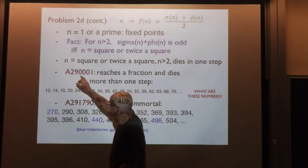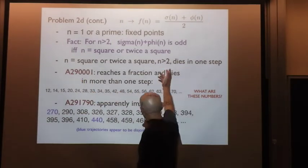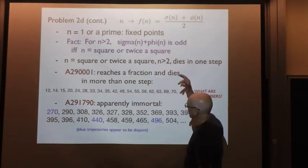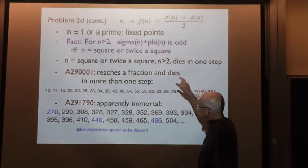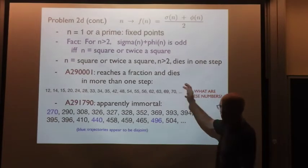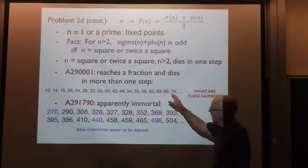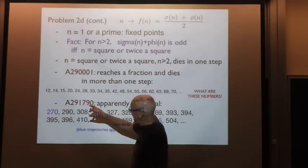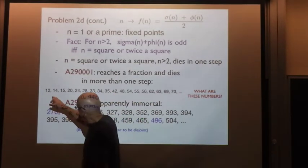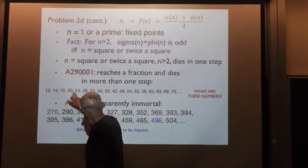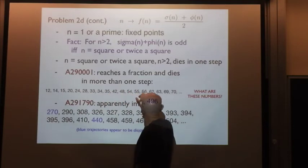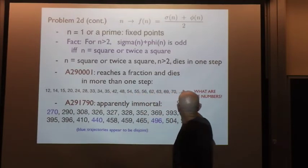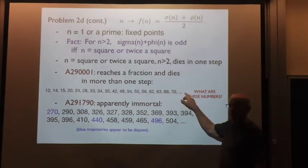That's the sequence A290001. These are numbers that reach a fraction and die in more than one step. This sequence is 12, 14, 15, 20. What are these numbers?